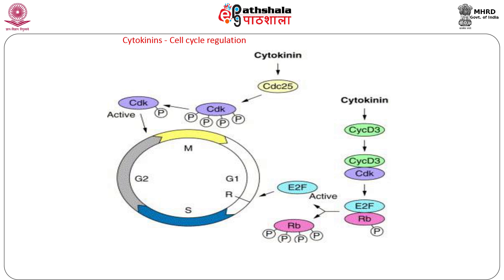G1/S transition occurs by association of D-type cyclins with A-type cyclin-dependent kinase, which brings about the phosphorylation and inactivation of retinoblastoma-related protein or RBR. This relieves the repression of E2F transcription factors that positively regulate transition to S phase. Cytokinins play a role in increasing the expression of D-type cyclin genes.